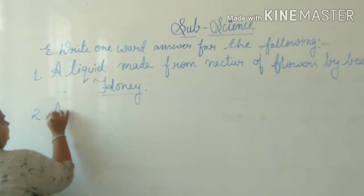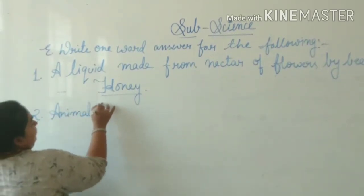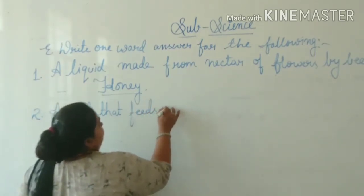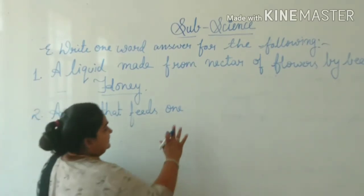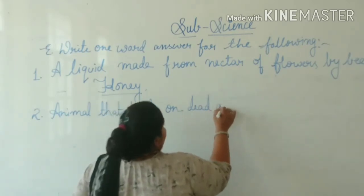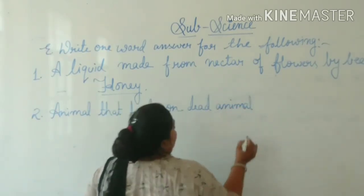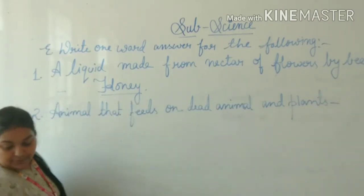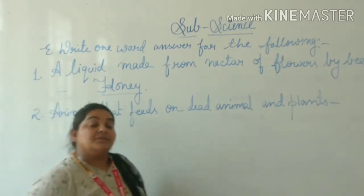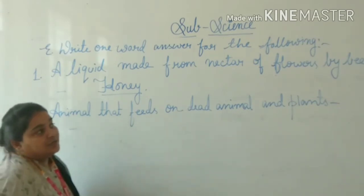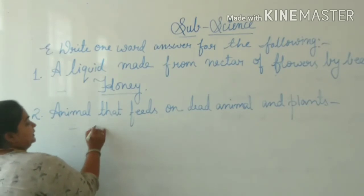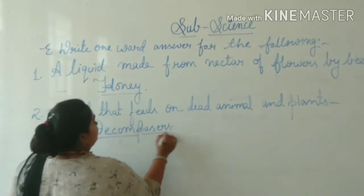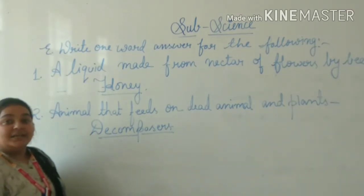Number two: animals that feed on dead animals and plants — what do we call them? They are not herbivores, they are not scavengers. They are decomposers. Write the spelling properly: D-E-C-O-M-P-O-S-E-R-S. Decomposers.